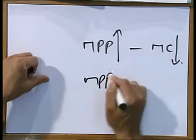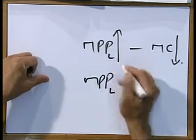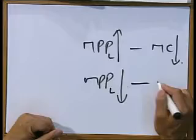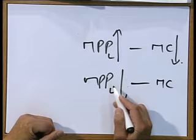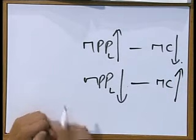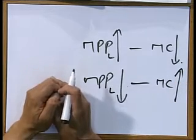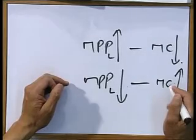But as you employ more labor, at a certain point the MPP of labor will start to decline. Workers will be standing in each other's way — the factory or the land will be overcrowded — and productivity will decline. When marginal physical product declines, then what will happen with the marginal cost? It will increase. So if MPP declines, MC increases.